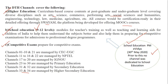Looking at the bifurcation of channels by managing body: channels 1 to 10 and channel 21 are managed by the Consortium of Educational Communication under UGC; channels 11 to 16 and channel 22 are managed by NPTEL; channels 17 to 20 are managed by IGNOU; channels 22 to 30 cover primary education; channel 31 and 32 cover secondary education; and channels 33 and 34 cover higher secondary education.